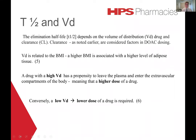Let us consider some important pharmacokinetic principles: the volume of distribution and drug clearance. The elimination half-life depends on the volume of distribution of a drug and the clearance (CL). Clearance is a factor taken into account in the dosing of DOAC drugs. Volume of distribution relates to BMI. A higher BMI is associated with a higher level of adipose tissue. Changes in the volume of distribution would be expected to have an influence on the half-life of a drug in obese patients.